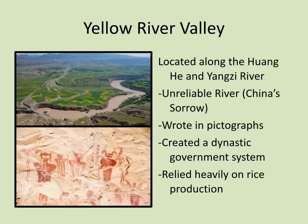The Yellow River is going to depend very heavily on rice production, and they also write in pictographs — more pictures and more unstructured than the hieroglyphics of Egypt.